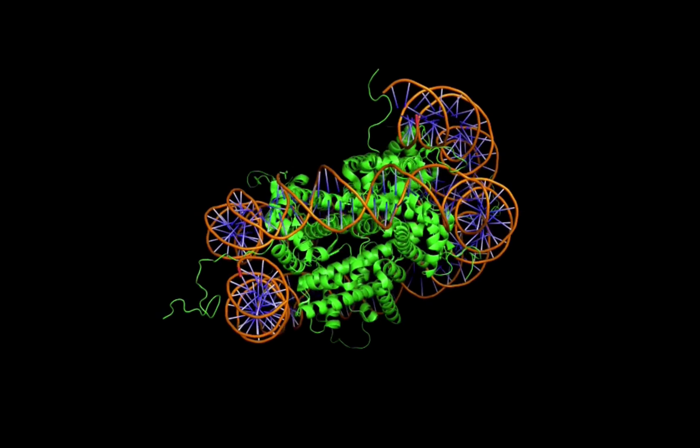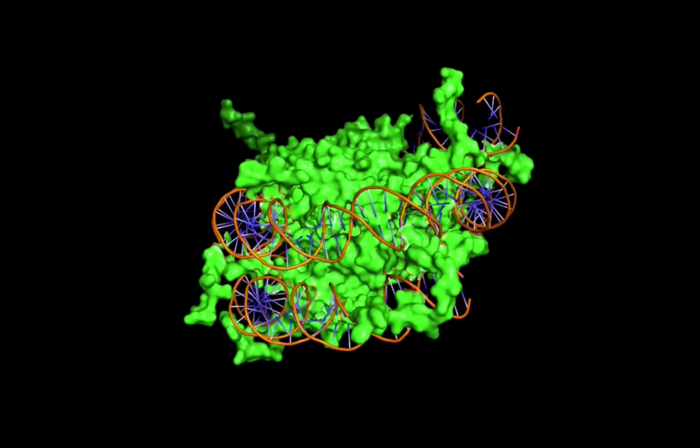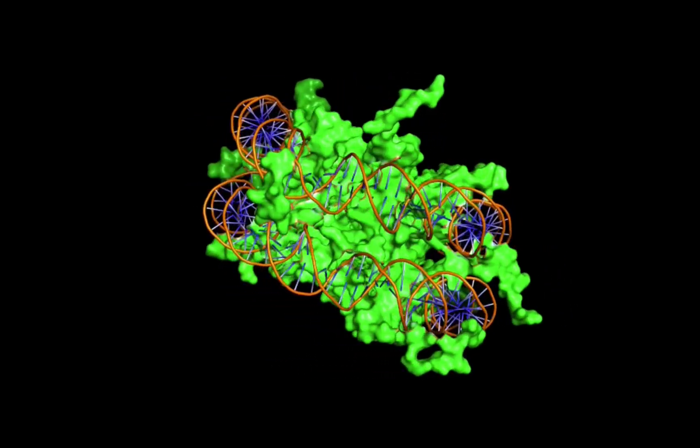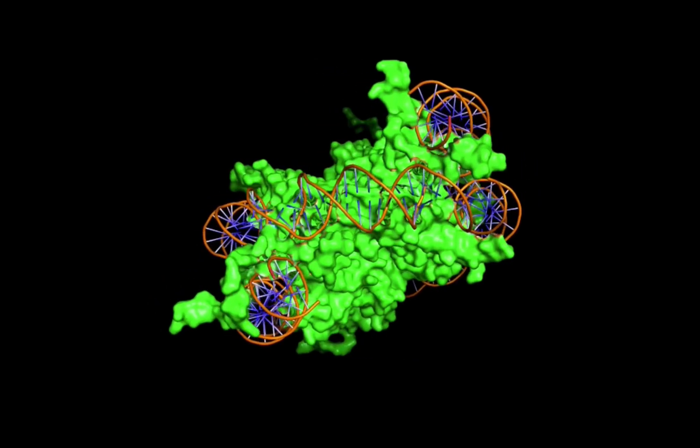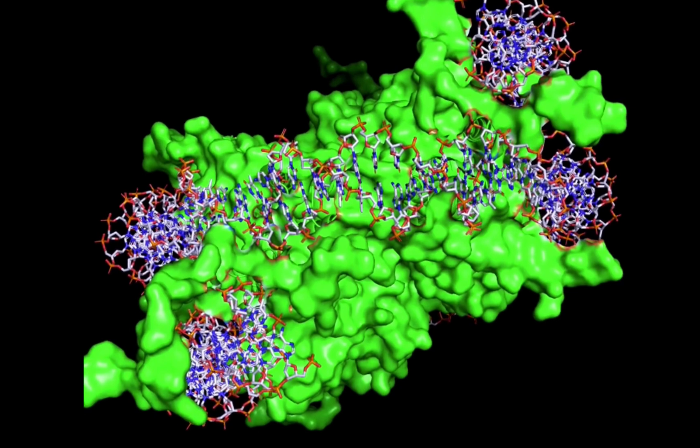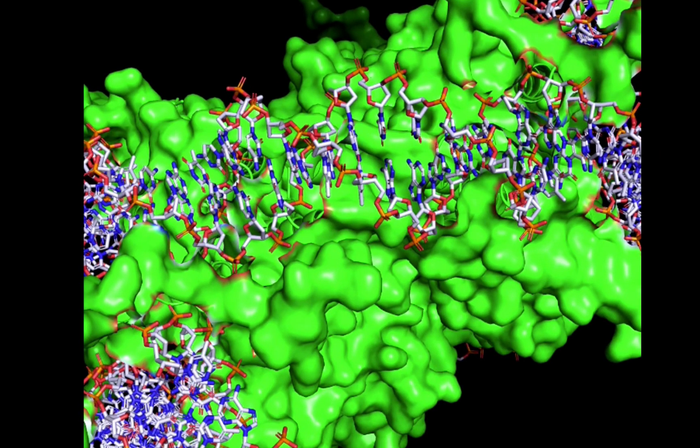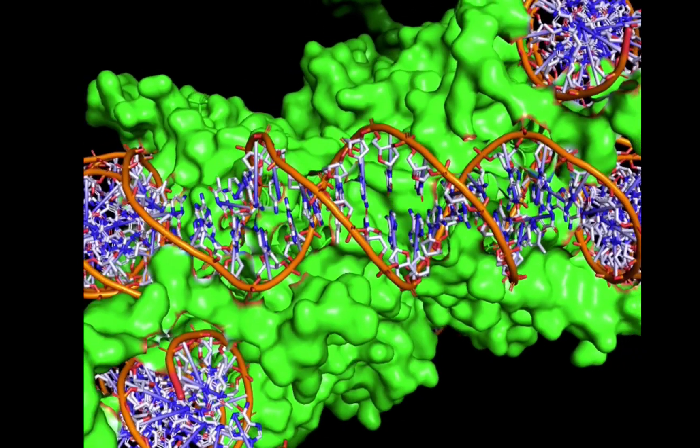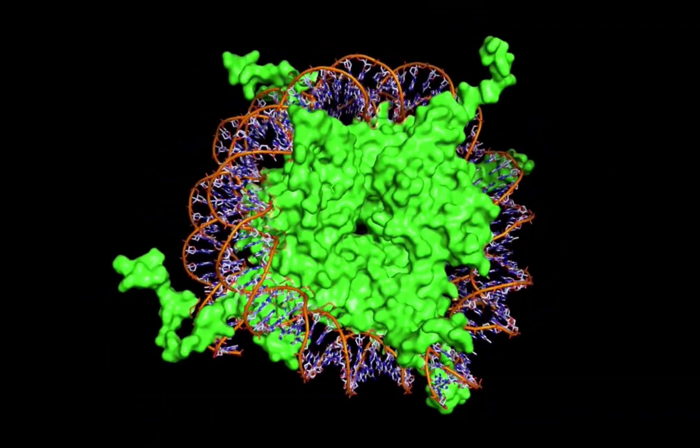In order to package the DNA strands to fit into the nucleus of your cells, proteins called histones wind the DNA around themselves in what is called a nucleosome. Scientists have been able to capture crystal structures of parts of these nucleosome complexes. And that's what we are looking at right now. Notice the way the DNA becomes wrapped around these proteins in such an orderly fashion? So amazing.